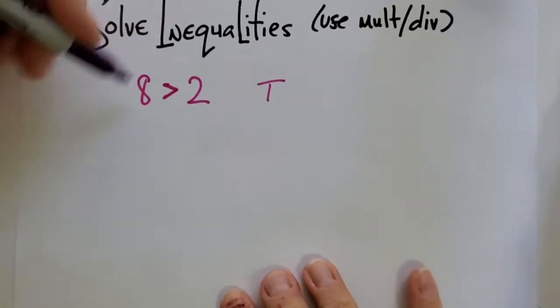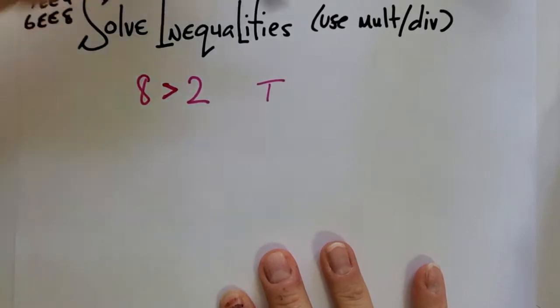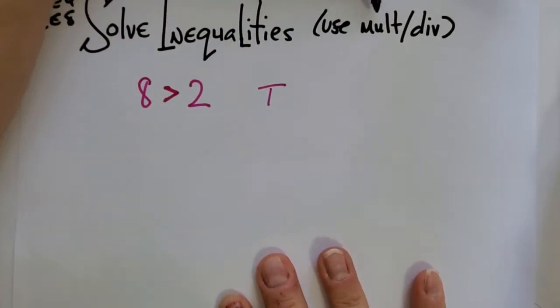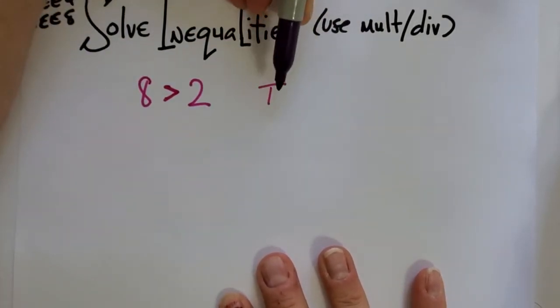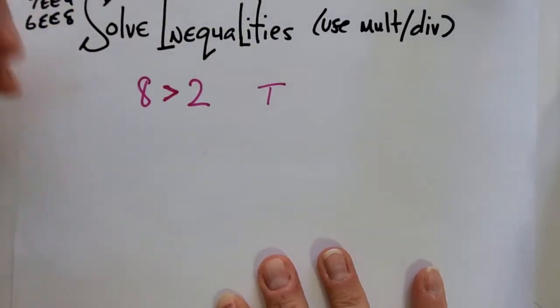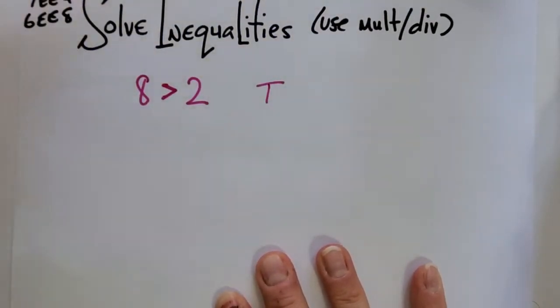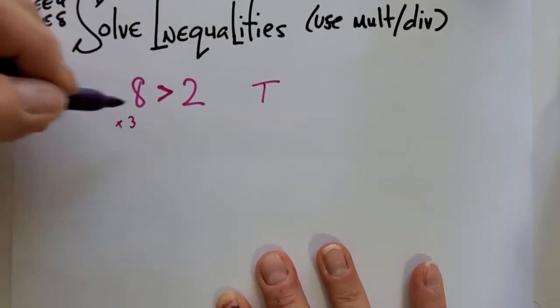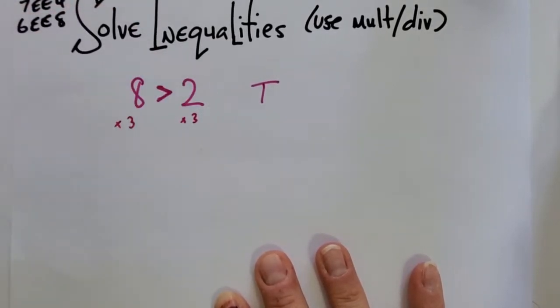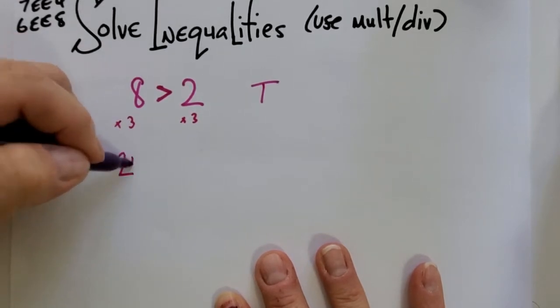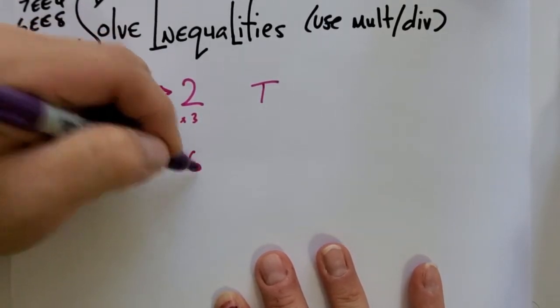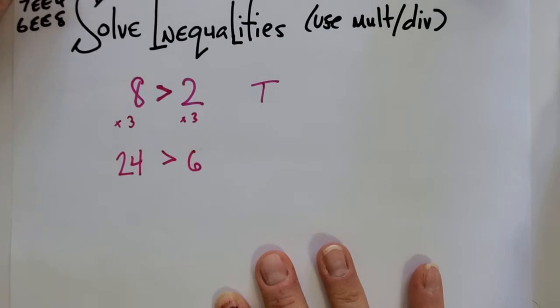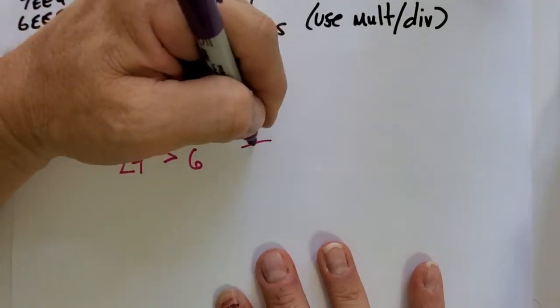Now I'm going to take this entire inequality, and I'm going to test to see if I can multiply it and see if it's still true or if it messes it up and makes it false. I'm going to multiply both sides of this inequality by 3, and I end up with 24 > 6. Is that still true? It is.